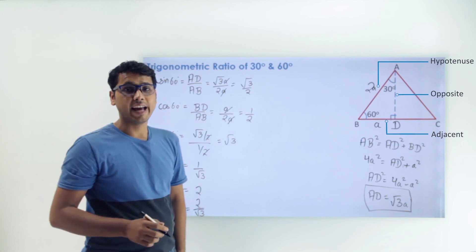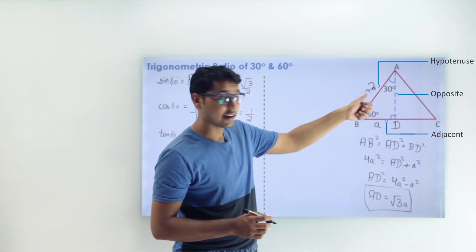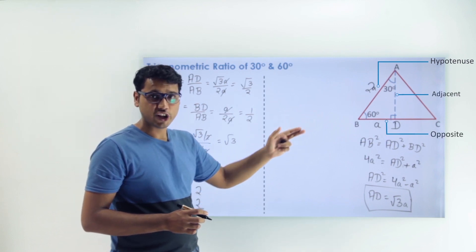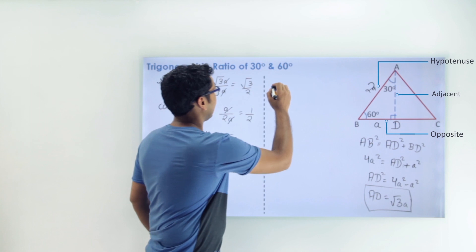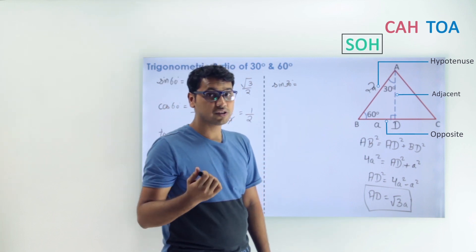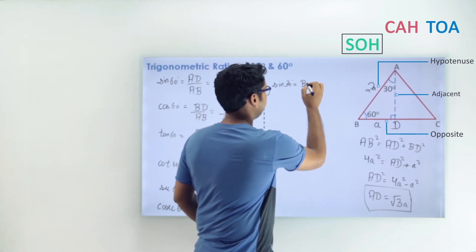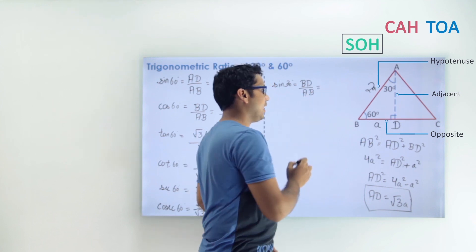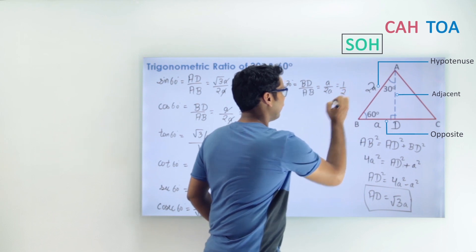Now we calculate values for angle 30 degrees. Taking angle A as 30°, the opposite and adjacent sides change: AD becomes the adjacent side and BD becomes the opposite side. sin 30° = opposite/hypotenuse = BD/AB = A/2A = 1/2.